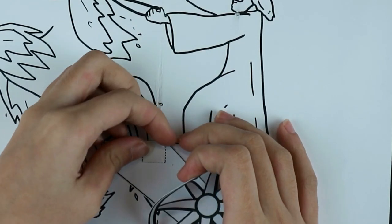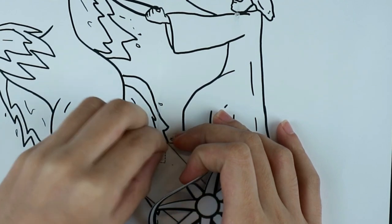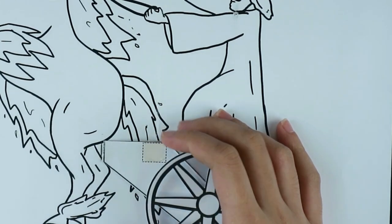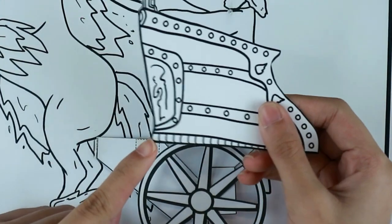After you stuck that double-sided tape, you can now attach the carriage. Stick the bottom left corner of the carriage to the pop-up arm.